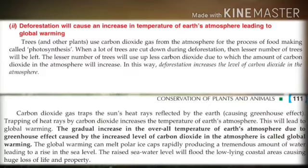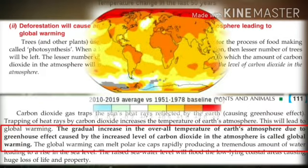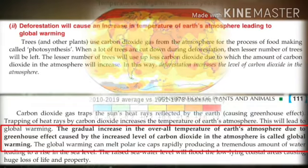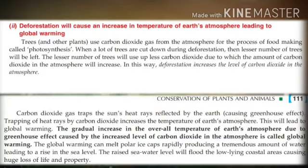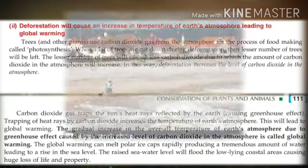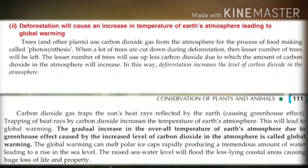When the greenhouse effect increases, this will lead to global warming. Global warming is the gradual increase in the overall temperature of Earth's atmosphere due to the greenhouse effect caused by increased levels of carbon dioxide. This global warming can melt polar ice caps rapidly, producing a tremendous amount of water, leading to a rise in sea level. The raised sea water level will flood low-lying coastal areas, causing huge loss of life and property.